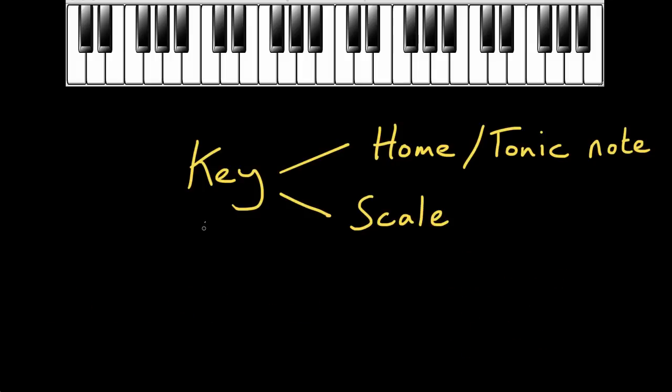There is one final thing that knowing the key of a piece of music can tell us, and that is the tonic chord. Just the same way that when we know the key of a piece of music we'll know the tonic note, so a piece in the key of B flat major will have a tonic note of B flat. Just the same way, that piece will have a tonic chord of B flat major.